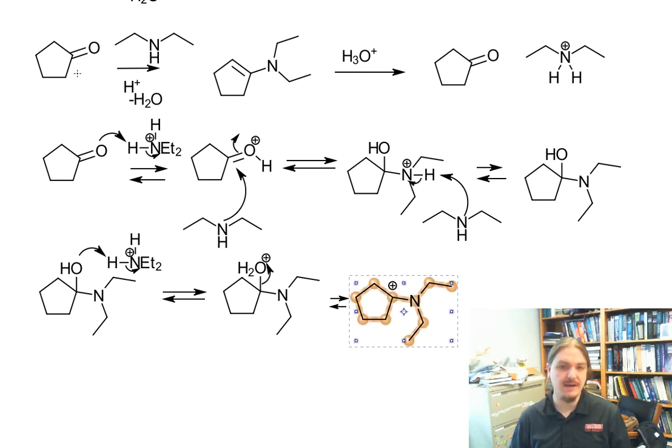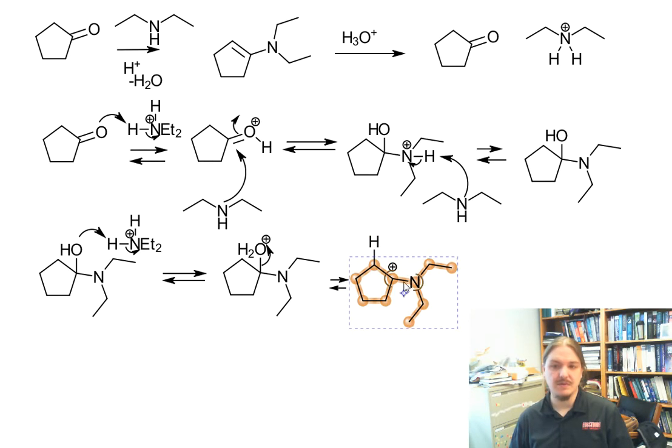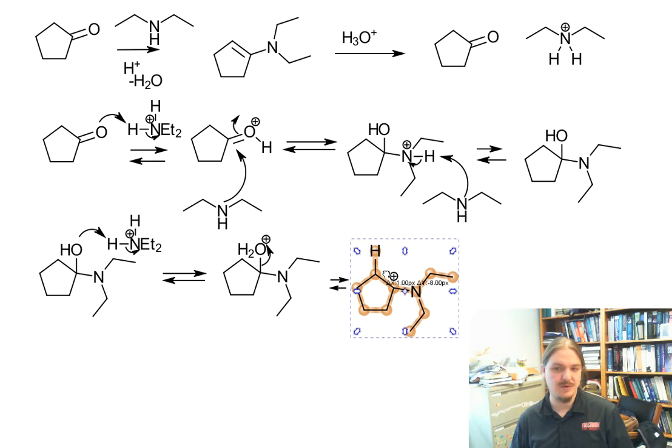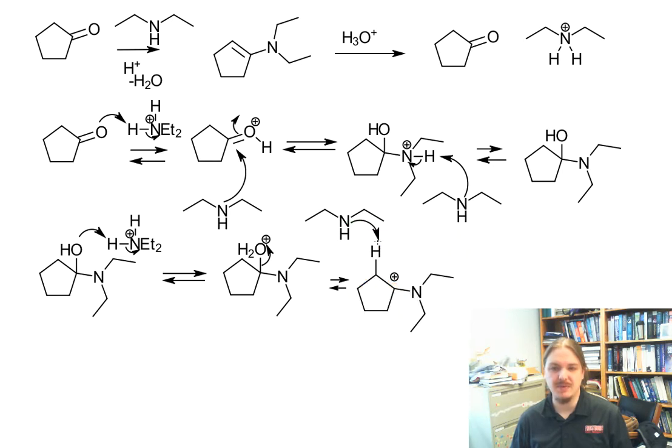Now, we don't have a hydrogen on this nitrogen to remove, but there is a hydrogen on the neighboring carbon. So we can do what should look like a more familiar E1 elimination, where the base takes a hydrogen from a neighboring carbon to form the pi bond that we need.